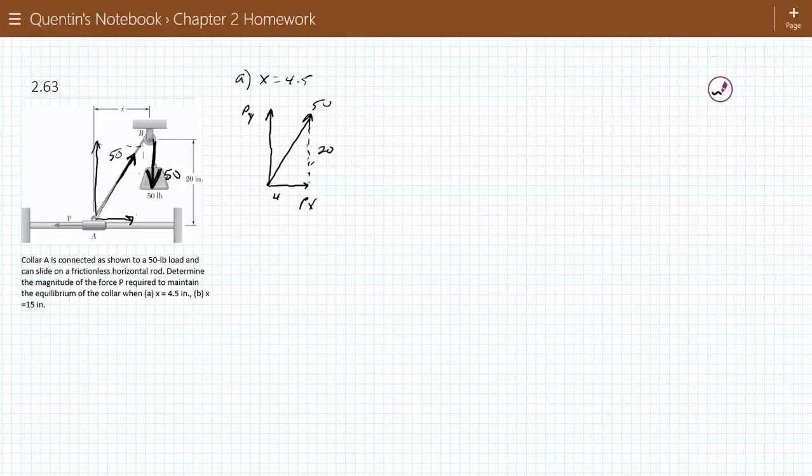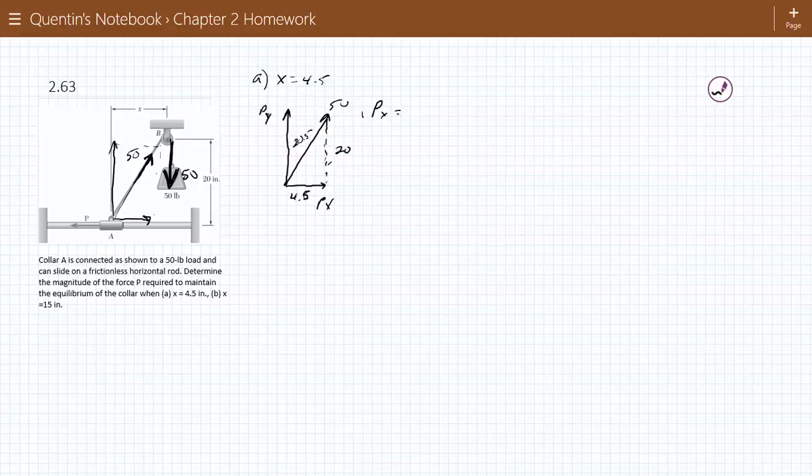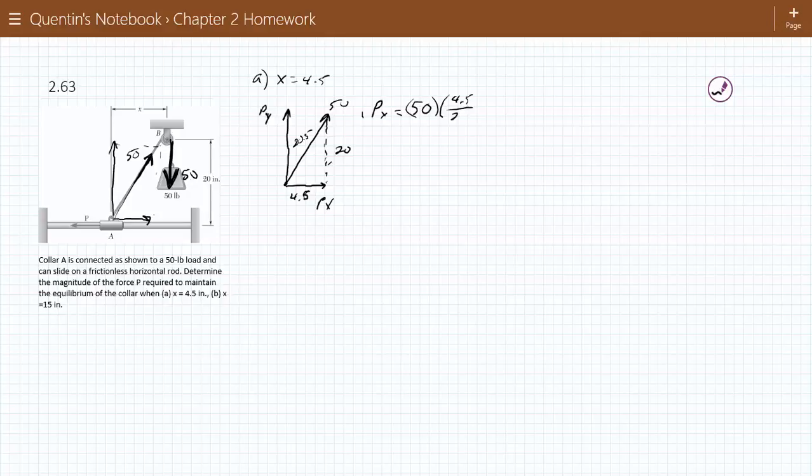And we know this distance right here is 20, this distance is 4.5. So when you take the square root of 4.5 square root of 20 square root of 20.5, so therefore, P in the X direction is 50 times 4.5 over 20.5, which gives you 10.98. So in order for this to be in equilibrium, you're going to have to turn around and pull back with the same thing.